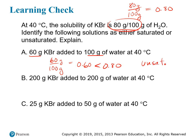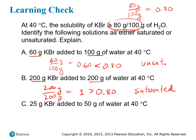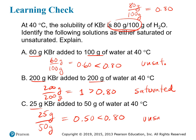The next one is 200 grams of KBr in 200 grams of water: 200/200 = 1.0, which is greater than the solubility limit of 0.8, so this is a saturated solution. The last one is 25 grams divided by 50 grams = 0.5, which is less than 0.8, so this is an unsaturated solution.